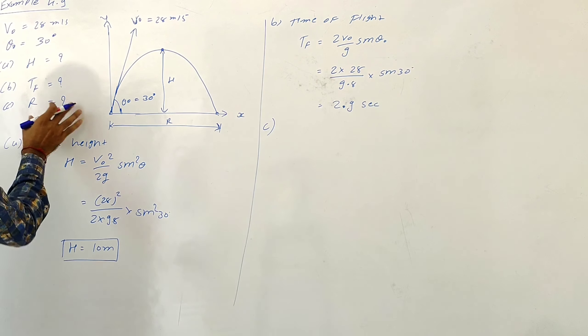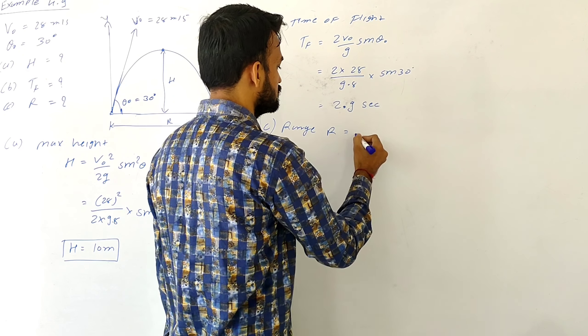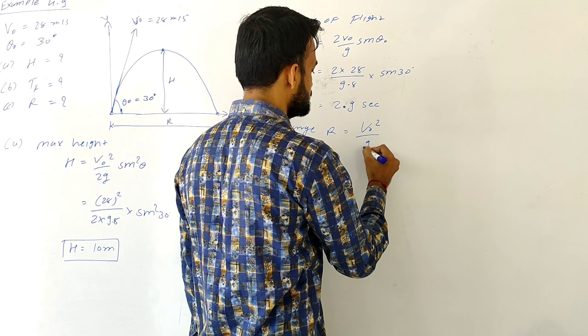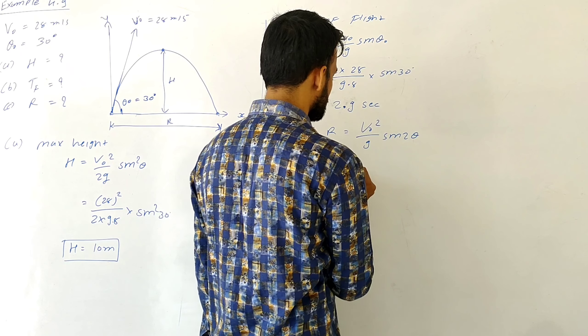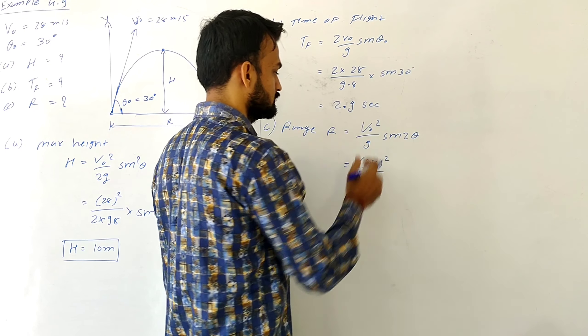For Part C, we have to find the range R. The equation for range R is V₀² sin(2θ) / g. V₀ squared is 28 squared, g is 9.8, and sin(2θ) — since theta is 30 degrees, 2θ becomes 60 degrees. On simplifying this term, you will get the answer: 69 meters.